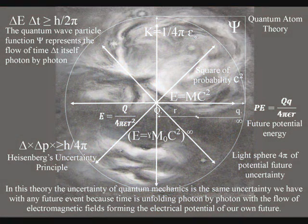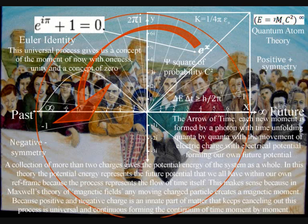Also, a collection of more than two charges gives the potential energy of a system as a whole. In this theory, the potential energy represents the future potential that we all have within our own reference frame, because the process represents the flow of time itself.